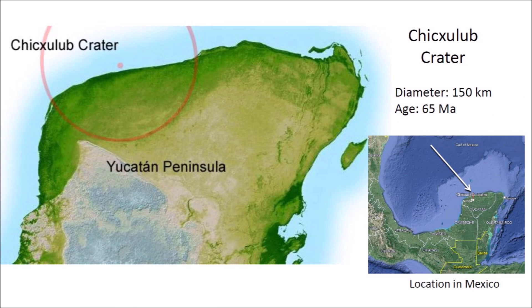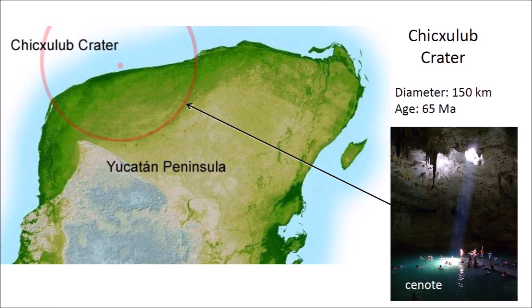The Chicxulub crater is located on the Yucatan Peninsula in Mexico. It is known for being the impact site of the asteroid or comet that may have caused the mass extinction of the non-avian dinosaurs about 65 million years ago. The crater has a diameter of approximately 150 kilometers and is buried beneath several layers of sediment in the Gulf of Mexico. The outer ring of the Chicxulub crater features a circular line of sinkholes or cenotes where the limestone has dissolved. For the Maya civilization, these bodies of water were sacred as the only source of fresh water in the jungle, and today some cenotes have been made into tourist attractions.